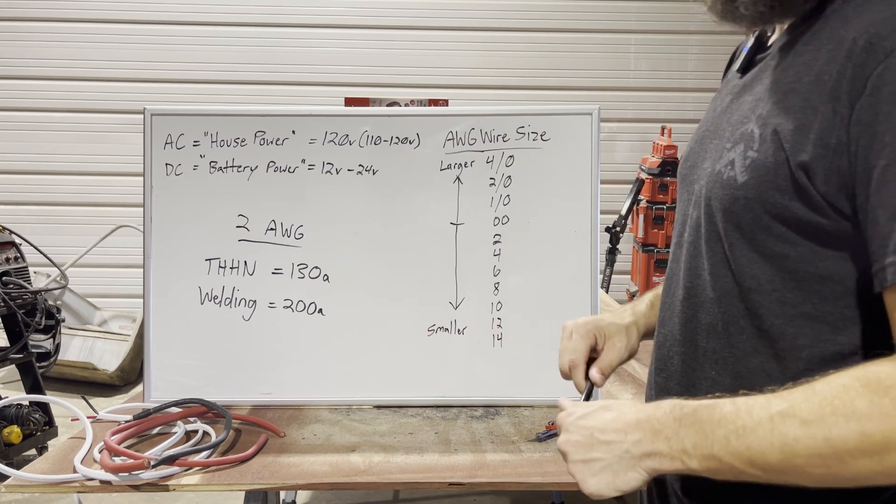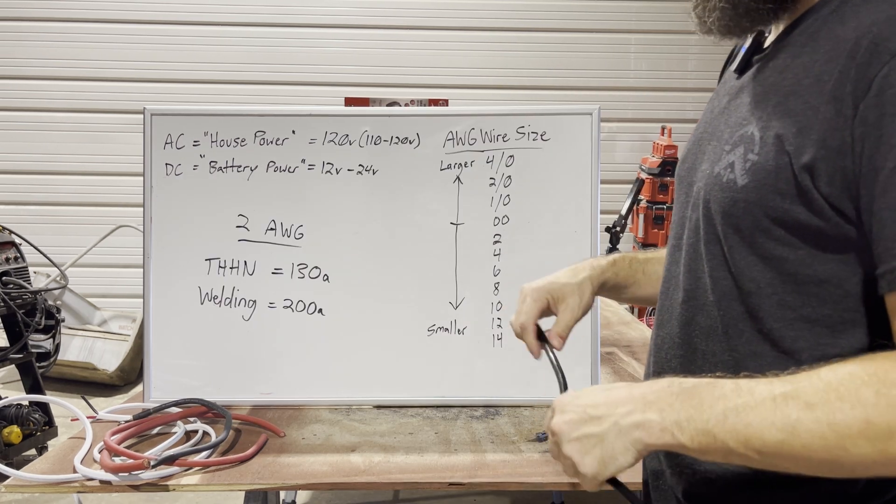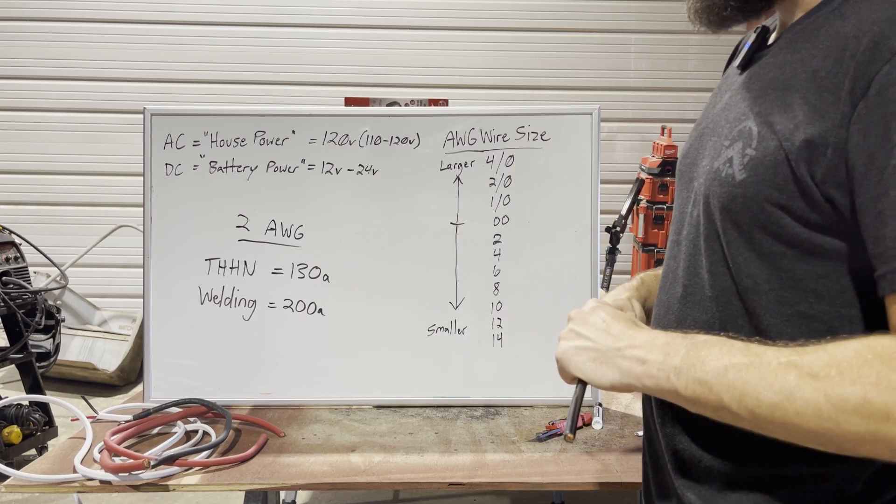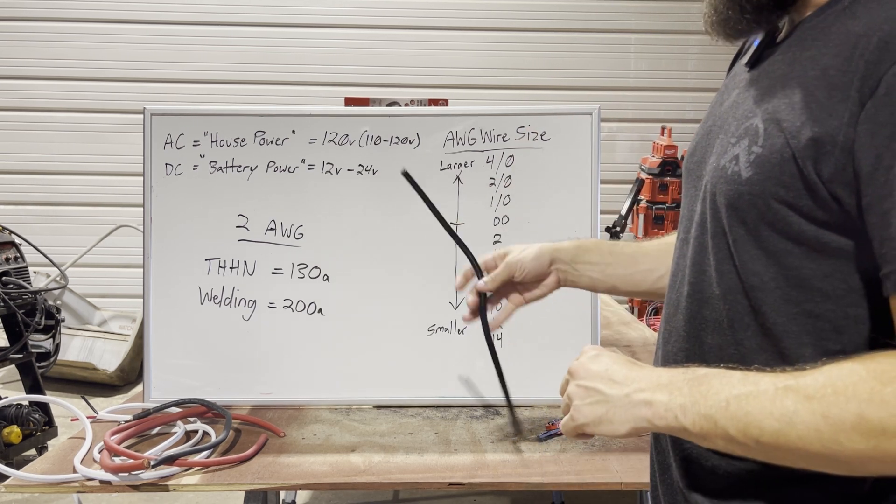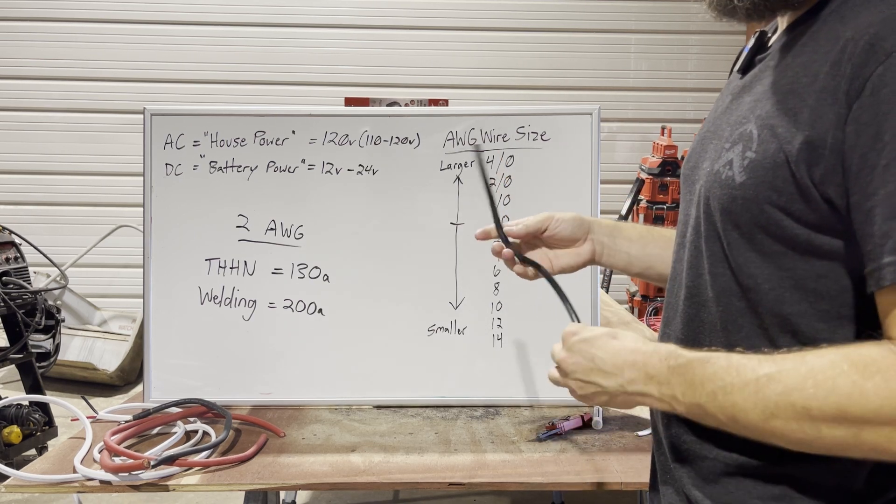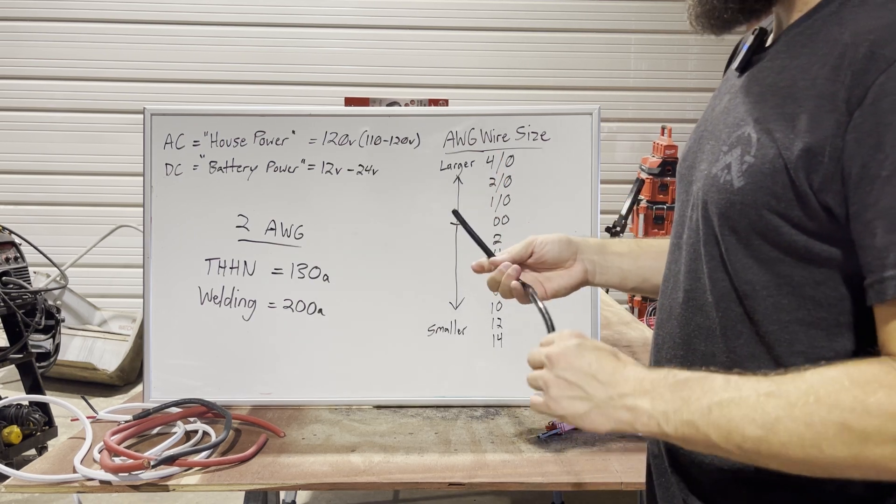So Romex is something you can get at Lowe's. The 10-3-SOOW for shore power, you can get that at Lowe's. Home Depot, I prefer Home Depot. But all the other things I would avoid getting locally. You're going to spend so much more on lugs and cable. And it's going to be the wrong cable.